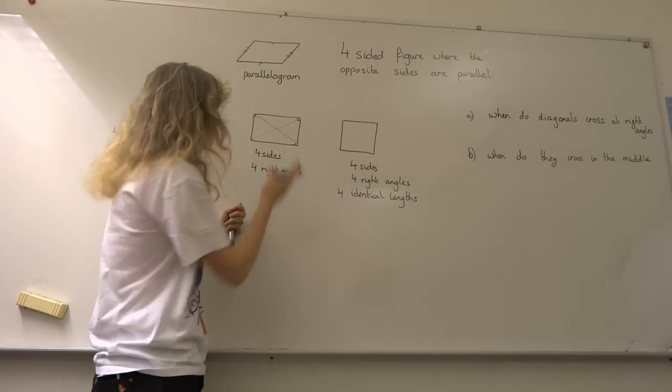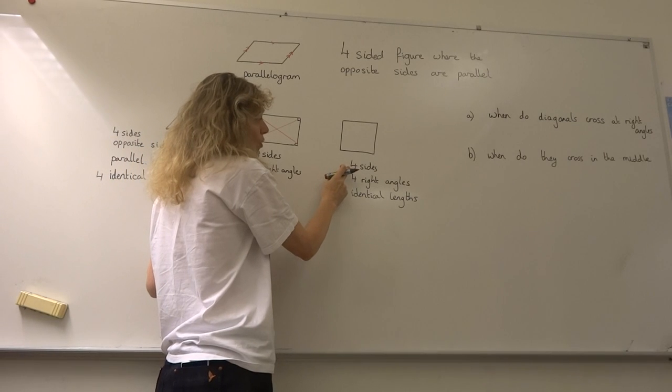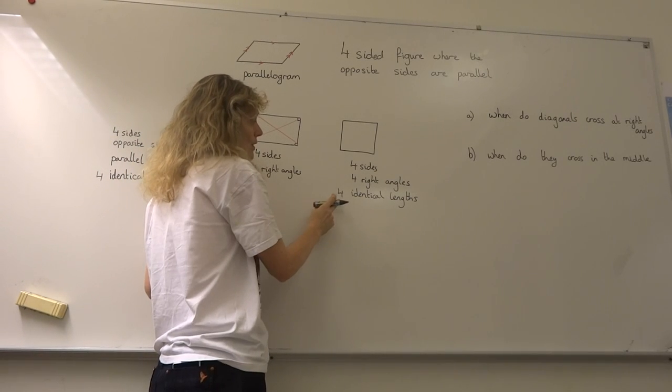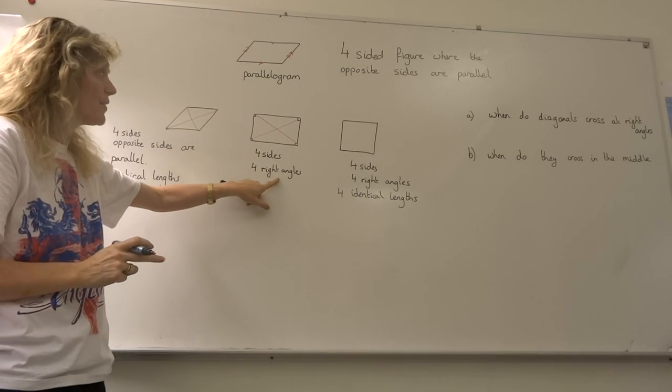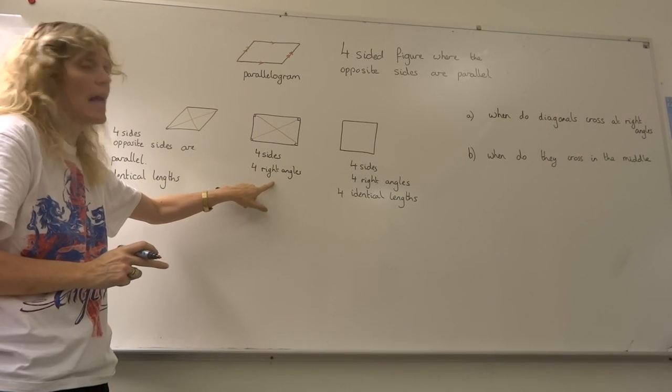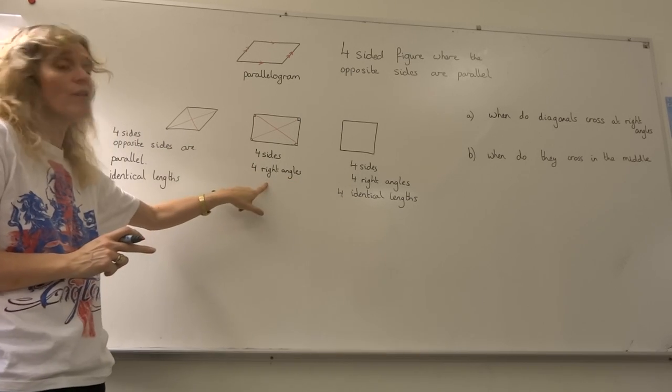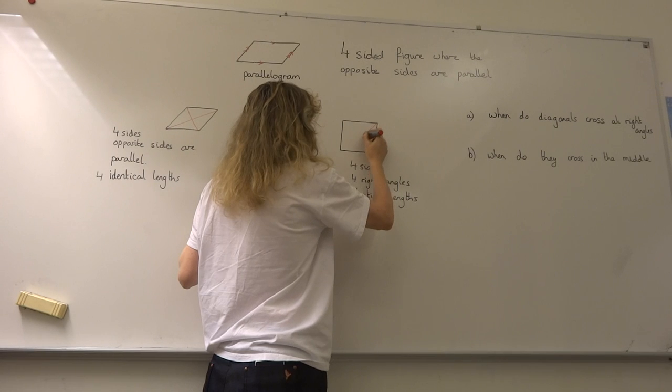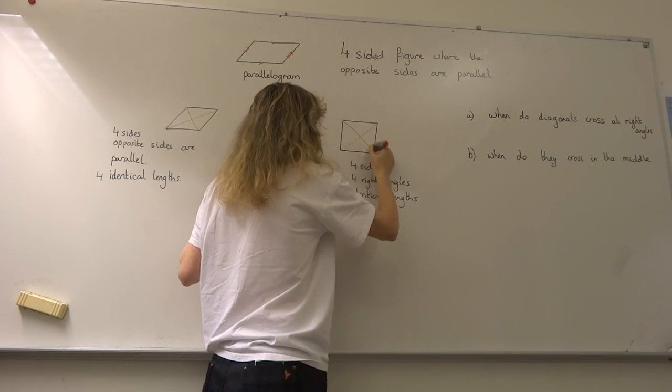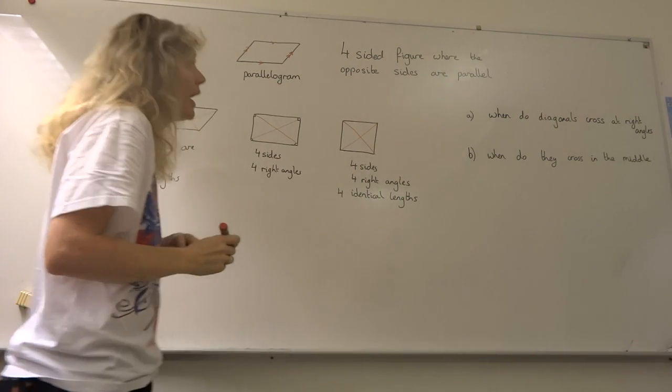We also have a square. A square is also a form of a parallelogram—four sides, four right angles, and four identical lengths. Notice that it hasn't said that the length of the sides in the rectangle have to be different, so a square is also a form of a rectangle. Let's draw the diagonals here.